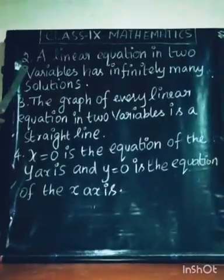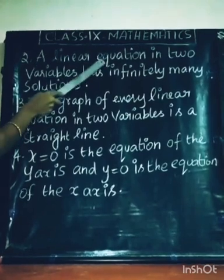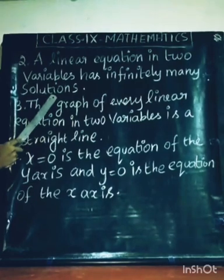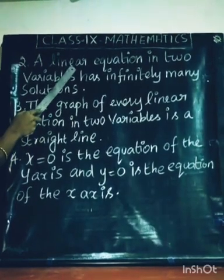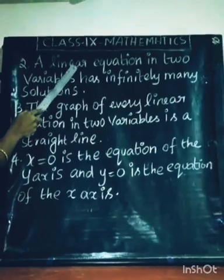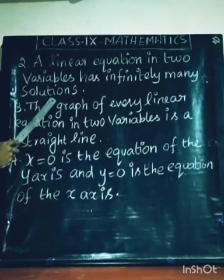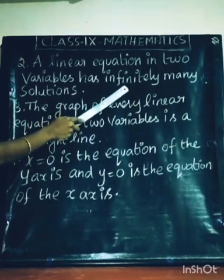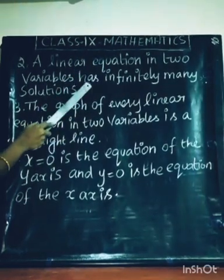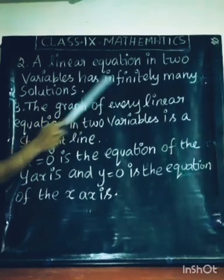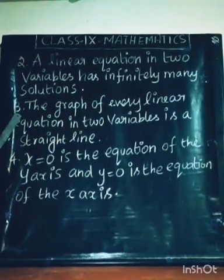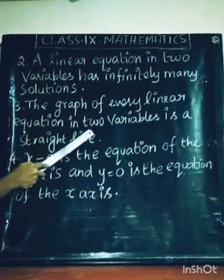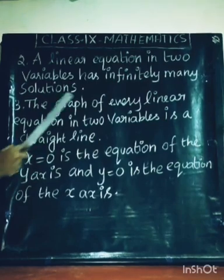Point Number 2: A linear equation in 2 variables has infinitely many solutions — infinitely means countless. Point Number 3: The graph of every linear equation in 2 variables is a straight line.